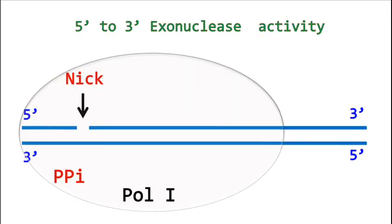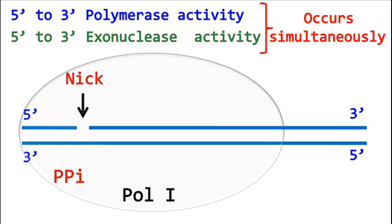The five prime to three prime exonuclease activity and the five prime to three prime polymerization activity occur simultaneously. And this process is known as nick translation.